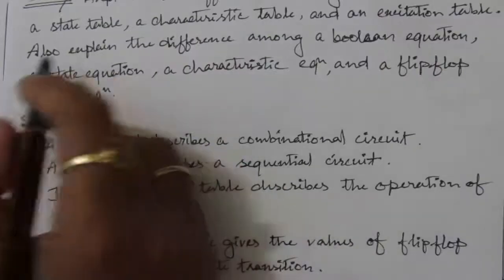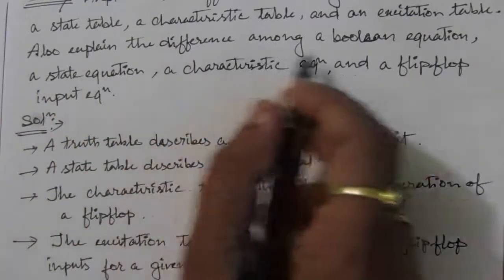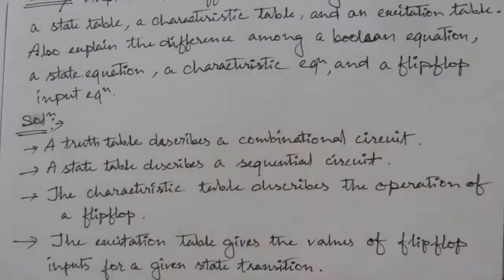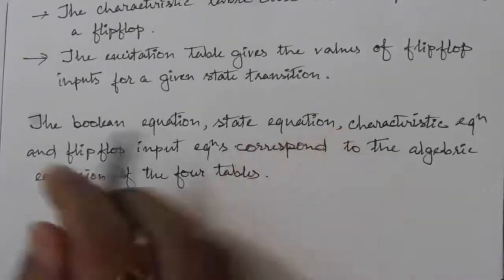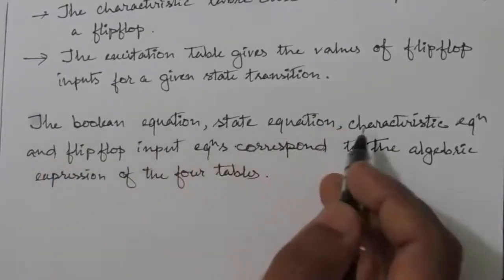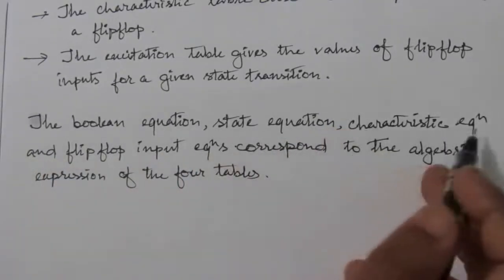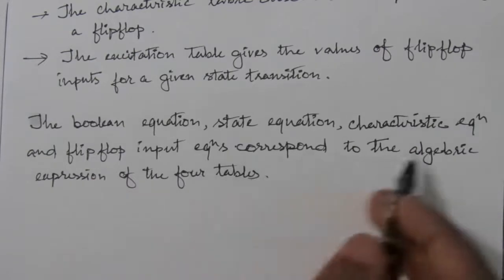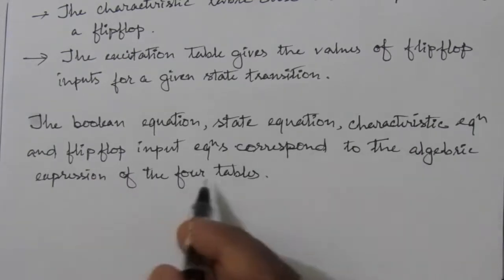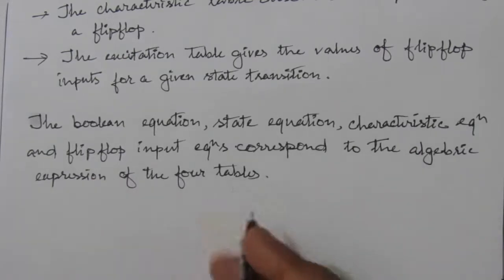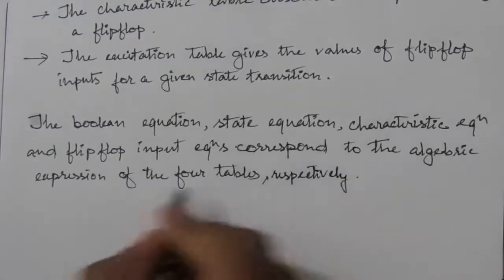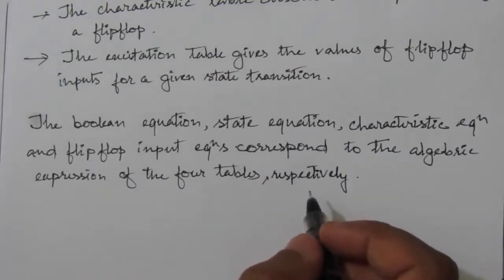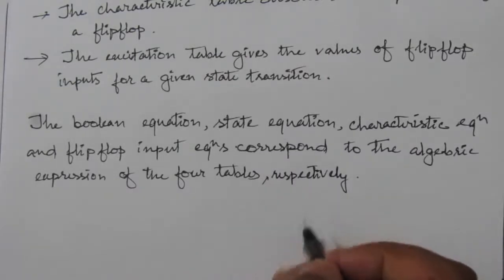In the next part, we are asked about the difference among the boolean equation, the state equation, the characteristic equation, and the flip-flop input equation. These equations correspond to the algebraic expressions of the four tables respectively — that is, the truth table, state table, characteristic table, and excitation table.